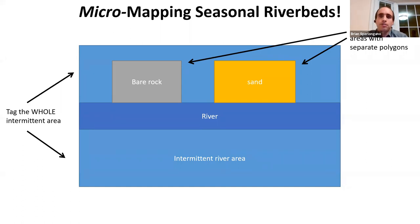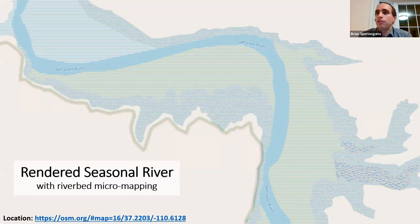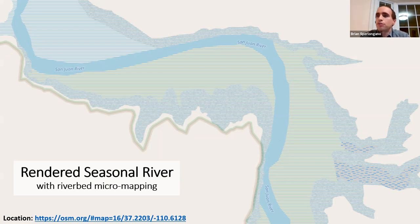Carto is one of the few map styles that actually renders intermittent water in a way that allows the underlying land cover to show through. I first encountered this style of tagging in Norway and found another example in Russia. The technique is a little bit controversial among mappers I've talked to.